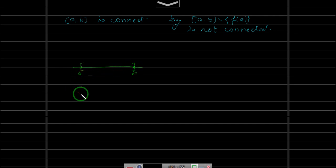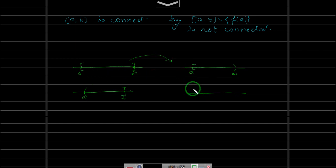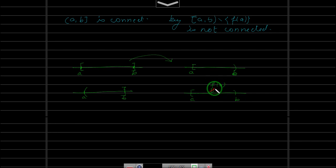Let me show this with a diagram. We have [a,b]: a is here, b is here. If we remove a, we get (a,b], which is still connected. Now this was mapped to [a,b). But when we remove f(a) — which is a point strictly in between, not equal to a or b — there is a break in the interval, so it cannot be an interval and is therefore not connected.